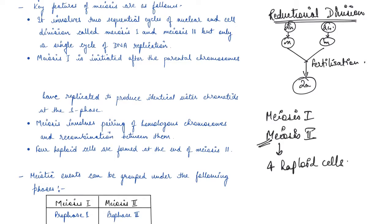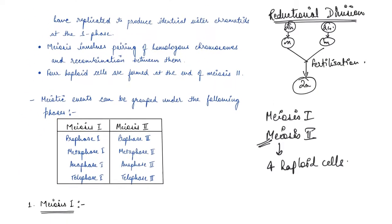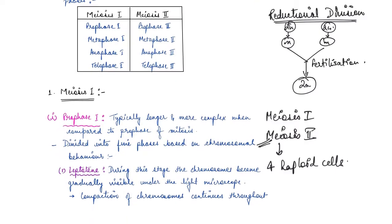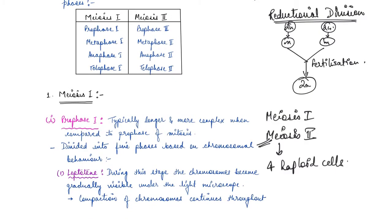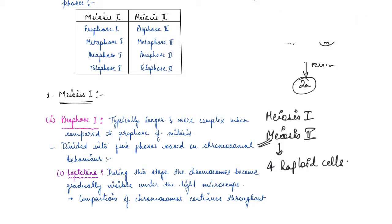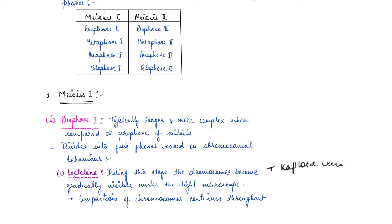The meiotic events are grouped under two phases: meiosis one and meiosis two. Both phases contain stages similar to mitosis - prophase, metaphase, anaphase, and telophase. In meiosis one you have prophase one, metaphase one, anaphase one, and telophase one; and in meiosis two you have prophase two, metaphase two, anaphase two, and telophase two.